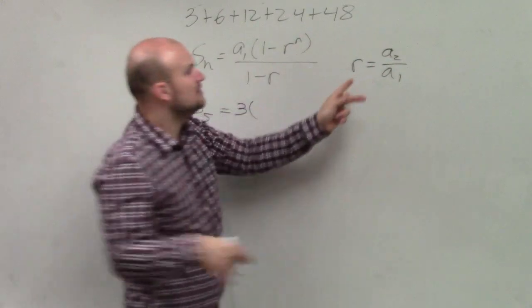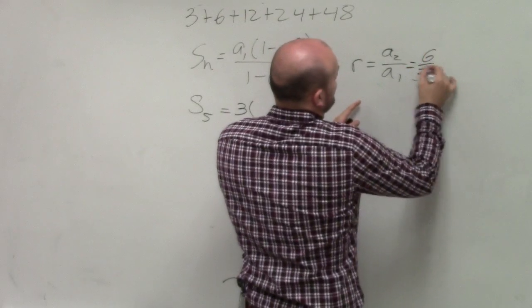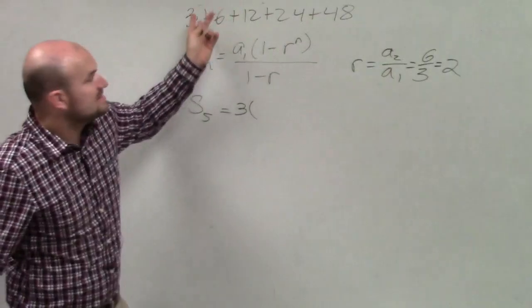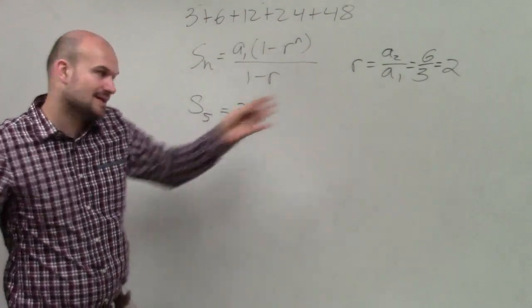Here, you're dividing. So therefore, I can simply just take 6 over 3, which equals 2. Now, when looking at 2, is the ratio between each of these being multiplied by 2? Yes. So that is the common ratio.